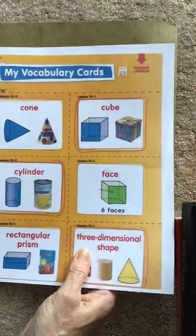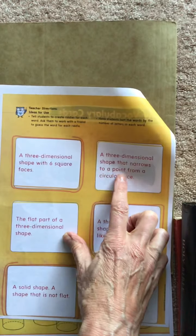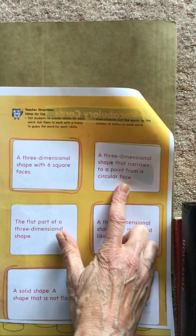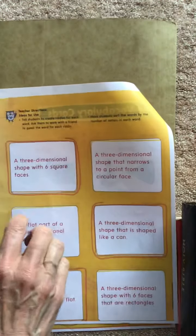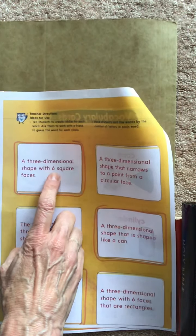All right, so the definition of cone on the back says, this is a three-dimensional shape that narrows to a point from a circular face. So the bottom of it has a circle face. The definition of a cube is a three-dimensional shape with six square faces.